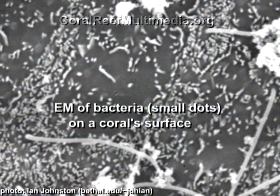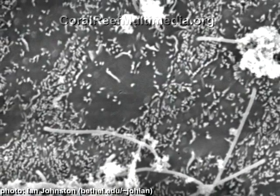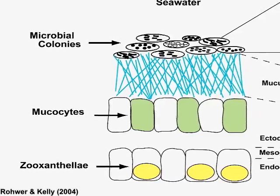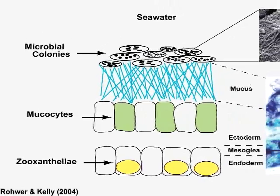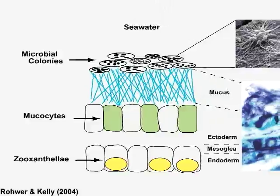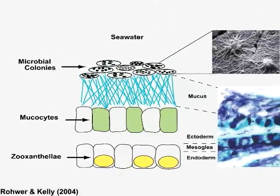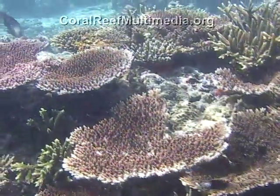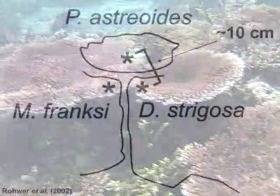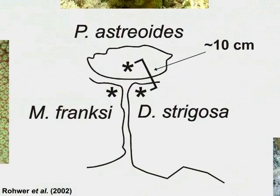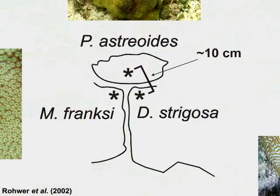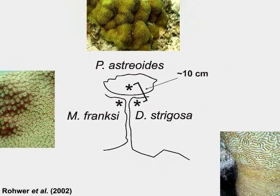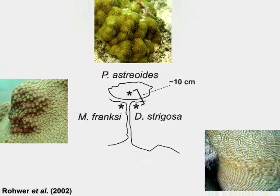Corals also form strict associations with other bacteria and archaea. These microbes live on the boundary layer between the mucus of the coral host and the surrounding reef water. Rich in carbohydrates, the coral mucus is believed to act as a source of energy for the microbes. These microbial communities are found to be specific between different corals both in time and space. For example, the Caribbean corals Diploria strigosa, Porites porites, and Montastraea franksi have distinct microbial communities that are maintained when the corals are separated by distances as little as 10 centimeters.